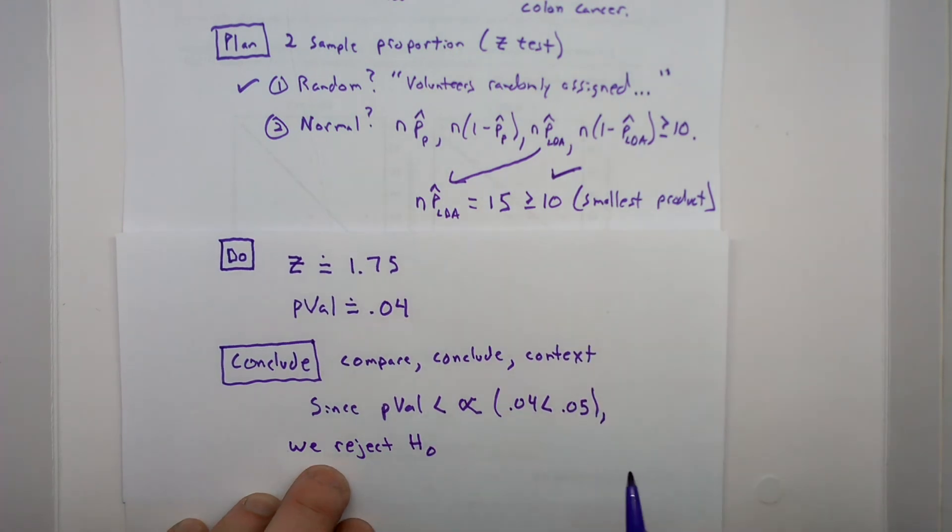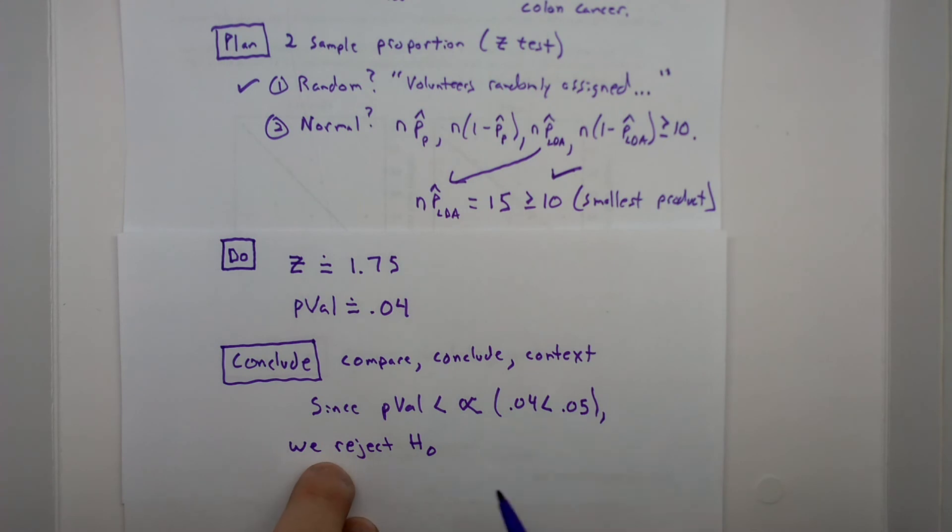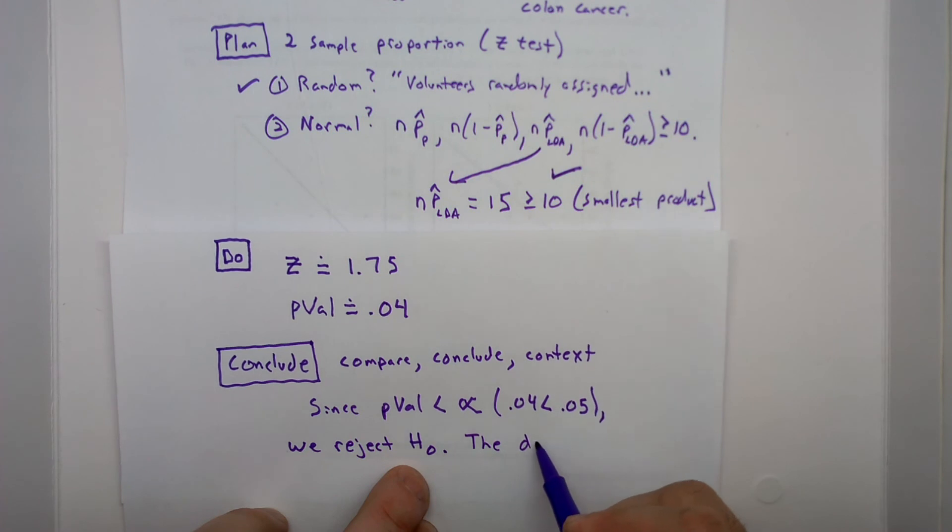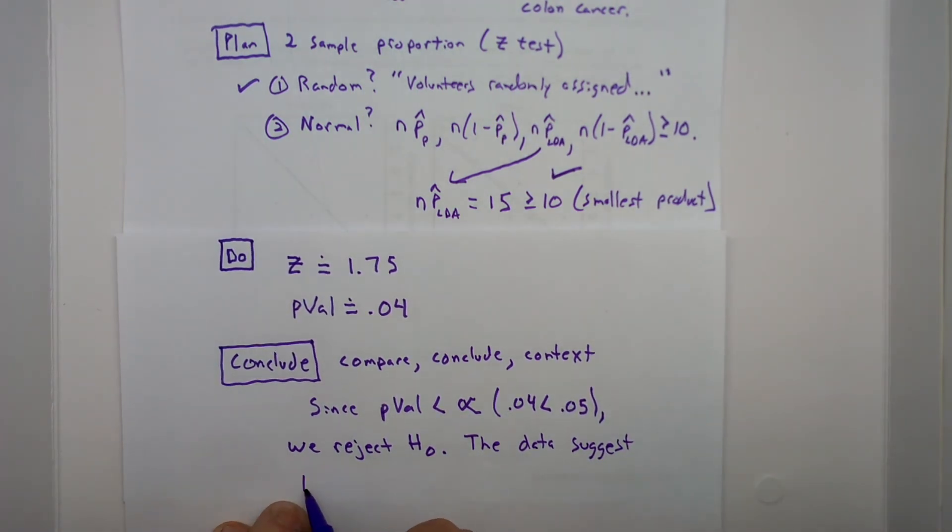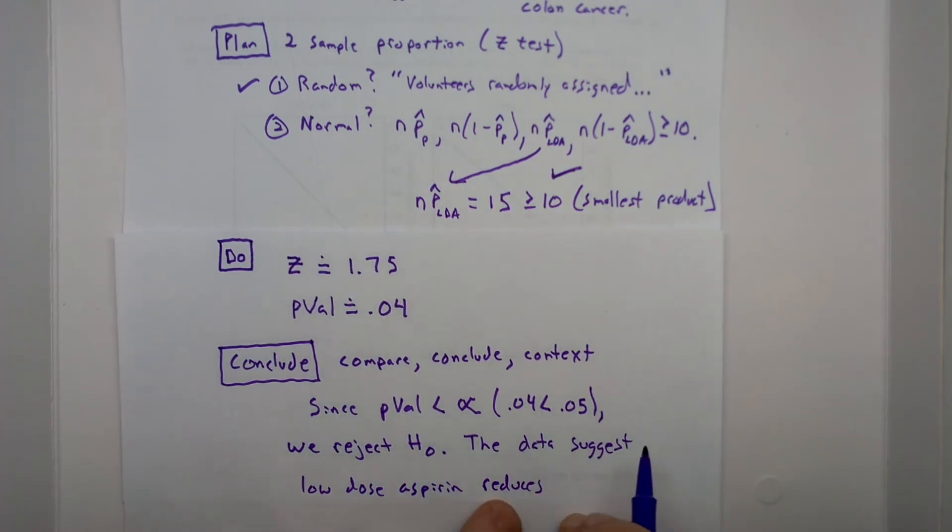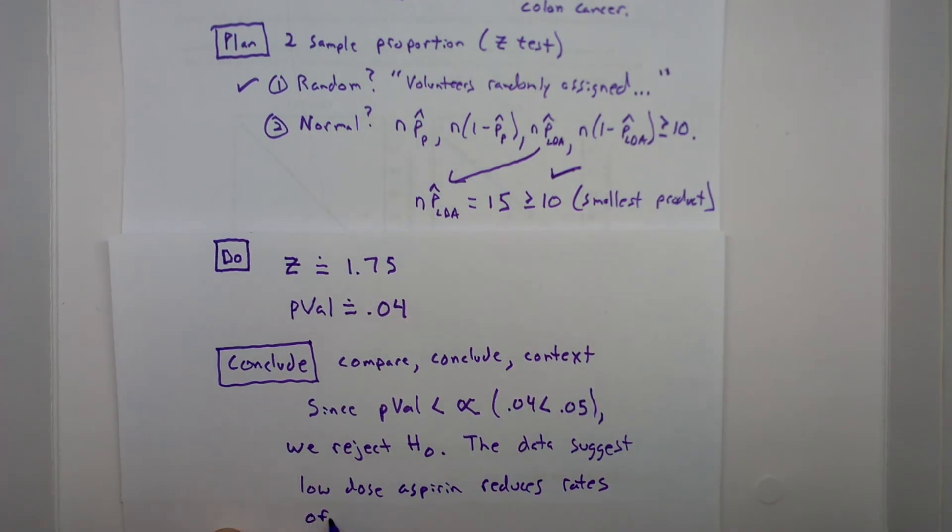We have substantial evidence, statistically significant evidence, at the .05 level. Now context. We are going to state H-A in context. The data suggests low dose aspirin reduces rates of colon cancer.